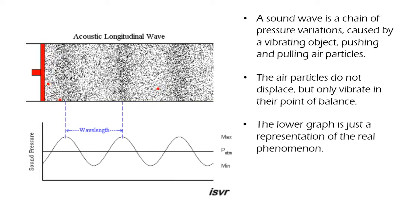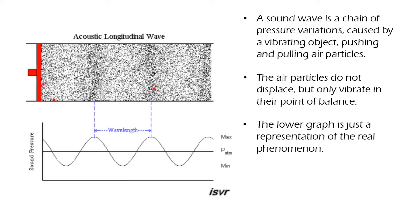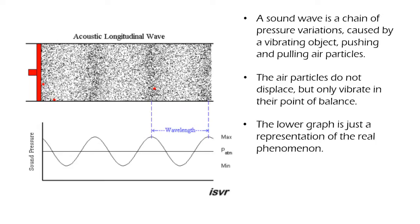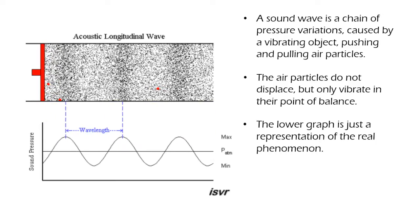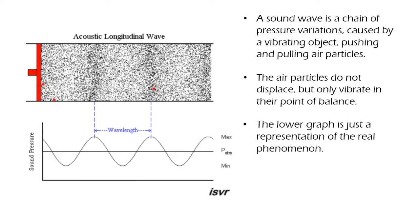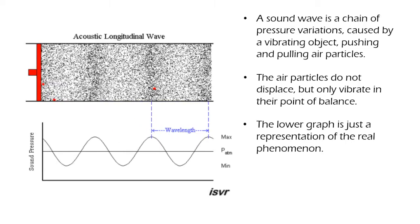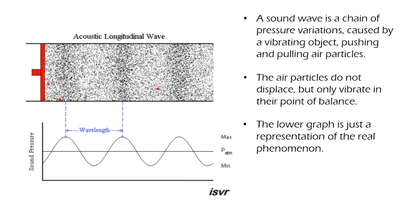Now, the wave at the bottom is simply a graph of what is happening in the real world. It is a more practical and simpler representation, since the upper animation is hard to draw. In the graph, the upward peaks, or crests, indicate the points of high pressure, and the downward peaks, or troughs, indicate the points of low pressure.